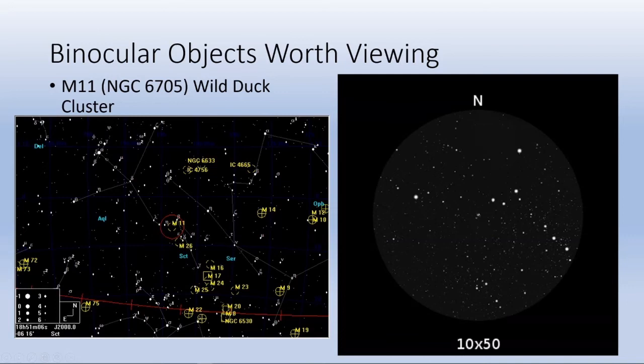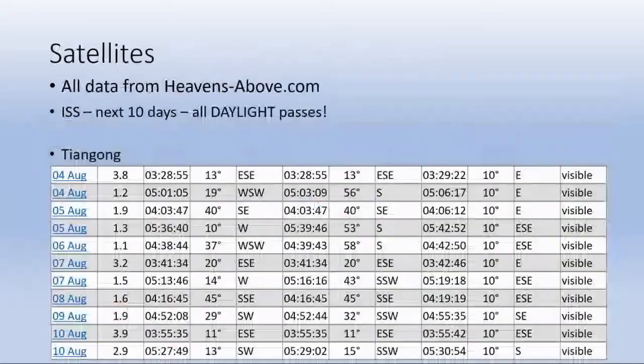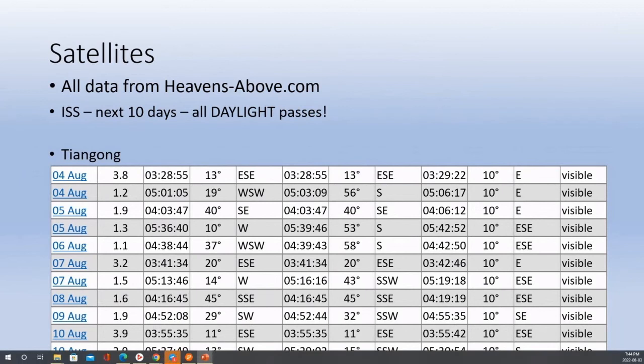For satellites, what will we actually have? Well for the next few days, all of the ISS passages are unfortunately daylight. The Chinese space station, that one you can see here we've got a couple of really good passes. Again, these are in UTC, so you'll have to just adjust with the time change that we have here. But the brightest one is magnitude 1.1 on August 6th, and it's a decent height above the horizon. So you've got a couple of them here, three of them that are really well placed if you want to go out and observe that particular satellite.